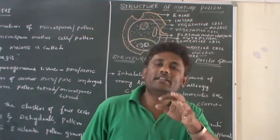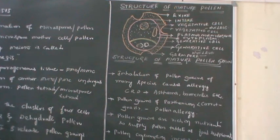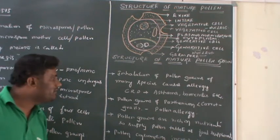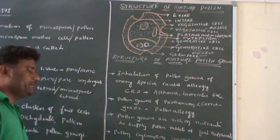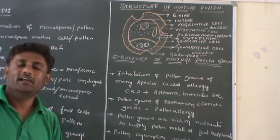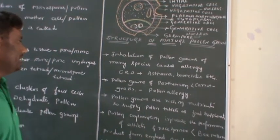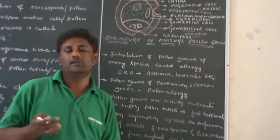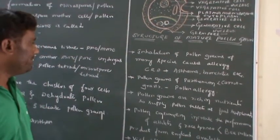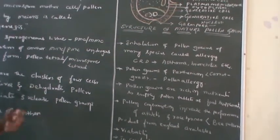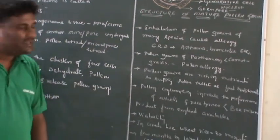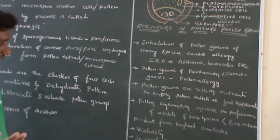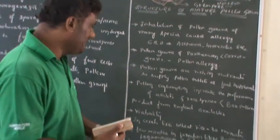Some more ideas about pollen grains: inhalation of pollen grains from some species will cause allergies — chronic respiratory disorders like asthma and bronchitis in human beings due to inhalation of pollen grains from certain plant species. Parthenium, commonly called carrot grass, was imported to India along with contaminated weed, and inhalation of its pollen grains causes pollen allergy. Additionally, pollen grains of some species are rich in nutrients, and such pollen grains are supplied as pollen tablets for food supplements. Consumption of certain pollen grains can increase the performance of athletes.